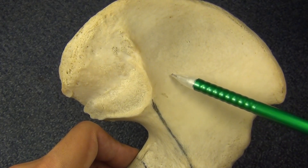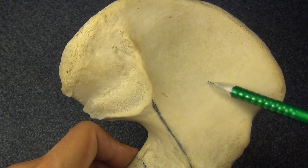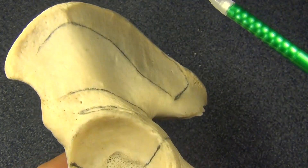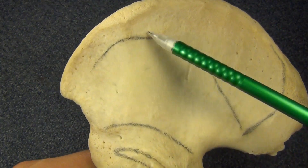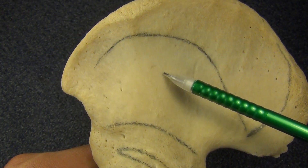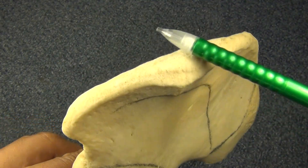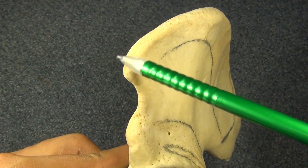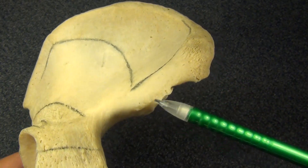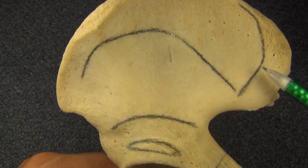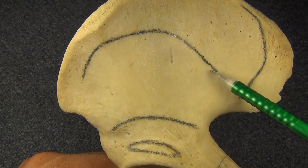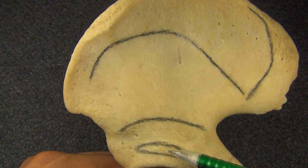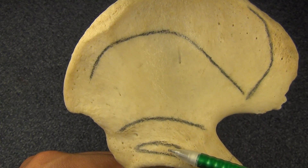The ala is a large, expanded portion. It consists of two surfaces — an internal surface, also known as the pelvic surface, and an external surface, also known as the gluteal surface — a crest, and two borders: the anterior border and the posterior border. The external surface has the posterior, anterior, and inferior gluteal lines, and the supraacetabular groove, also known as the acetabular brim.